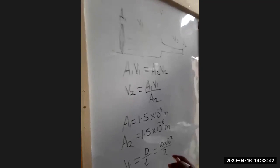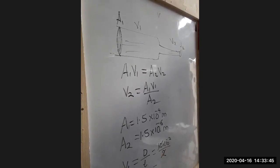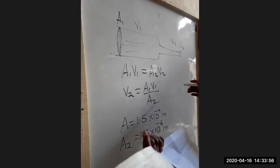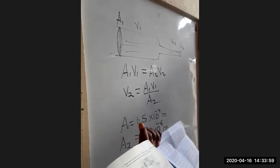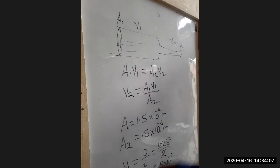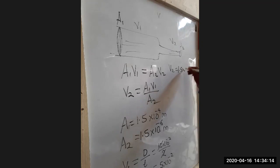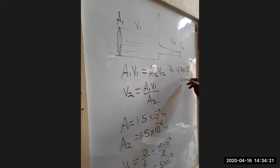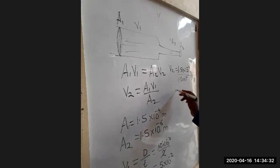Two seconds — divide that, you get 5 times 10 raised to negative 2. If we go on, we are going to have area 1, area 2, and velocity 1. Now V2 is going to be equal to area 1 which is 1.5 times 10 raised to negative 4 meters over area 2 which is 1.5 times 10 raised to negative 6, multiplied by velocity 1 which is 5 times 10 raised to negative 2.